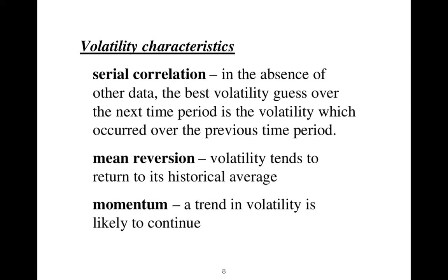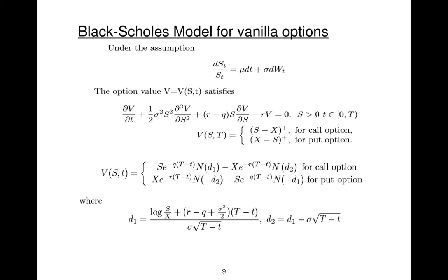We can use mean reversion—volatility tends to return to its historical average. It's a data-driven sentence. Data has shown momentum—a trend in volatility is likely to continue.